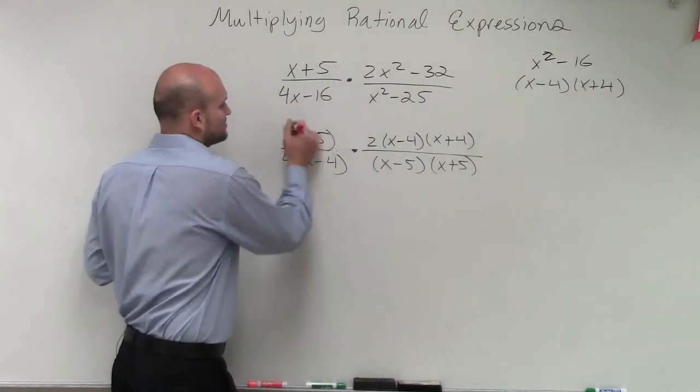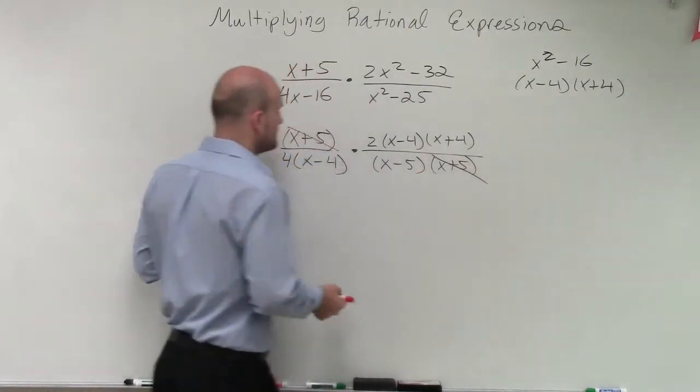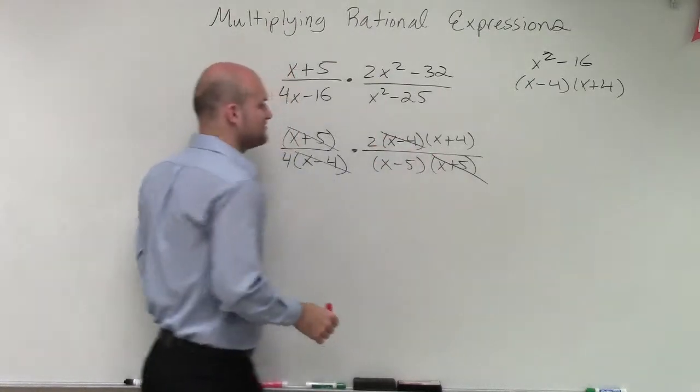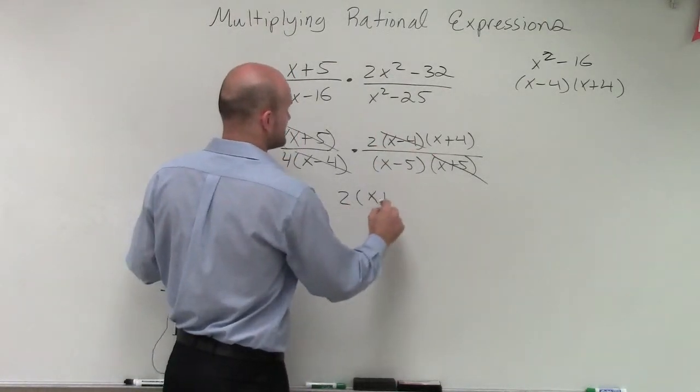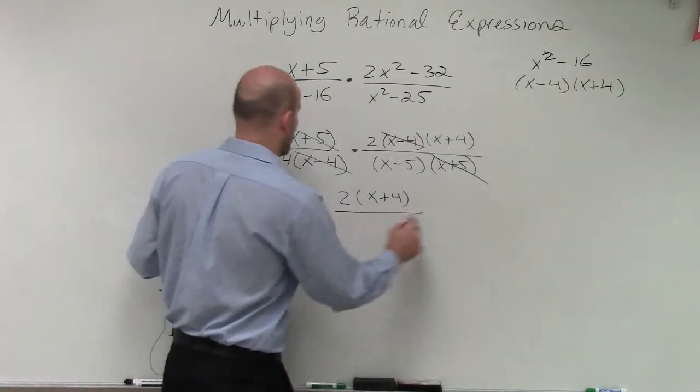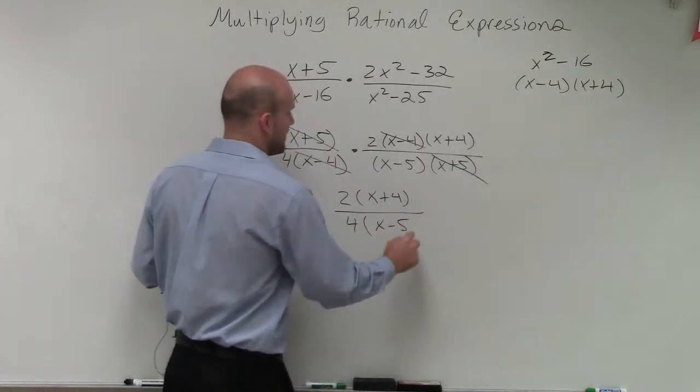Well, x plus 5 divided by x plus 5 goes to 1. x minus 4 divided by x minus 4, that goes to 1. Therefore, I'm left with a 2 times x plus 4 divided by a 4 times x minus 5.